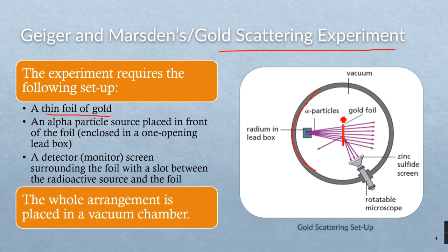Then the alpha particles needed a source where the source would radiate alpha particles and shoot them straight at the gold foil. There was a detector screen or monitor surrounding the foil, which was this ring that can detect the deflected alpha particles.